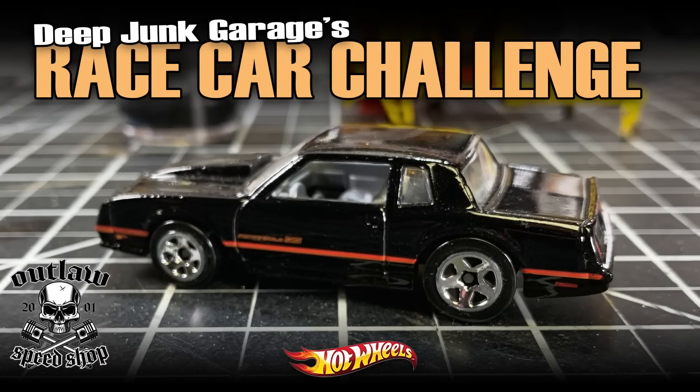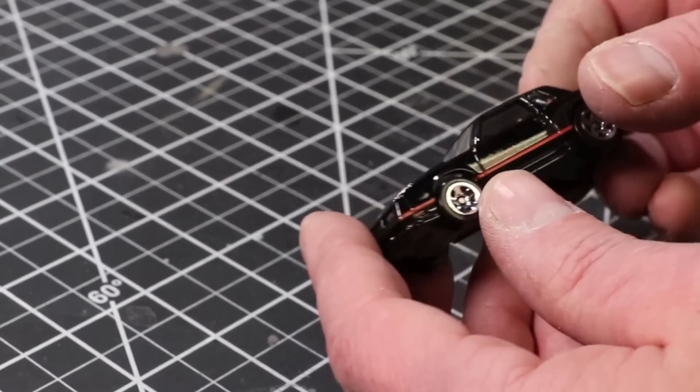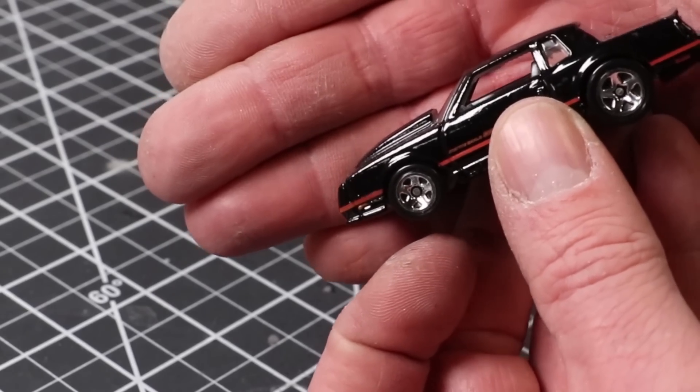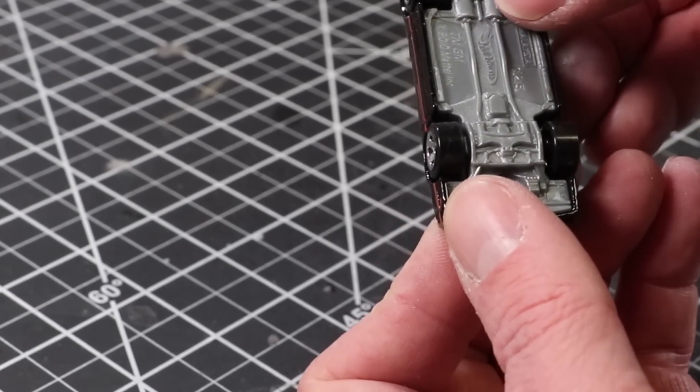Hey, it's Keith from Outlaw Speed Shop, and welcome to the Deep Junk Garage Race Car Challenge. I had a GTO picked out and all set aside, and at the very last minute, like literally the last minute, this kind of struck me and decided to go with the Monte Carlo Supersport.